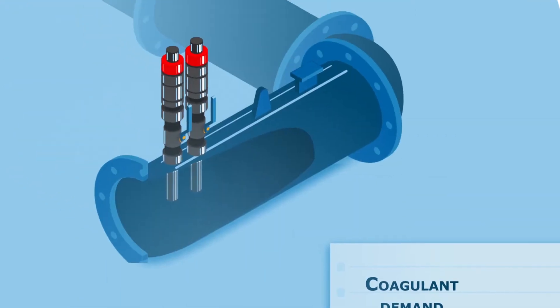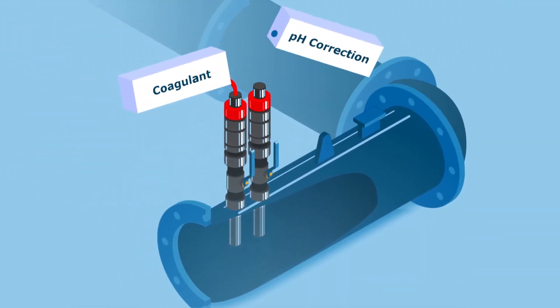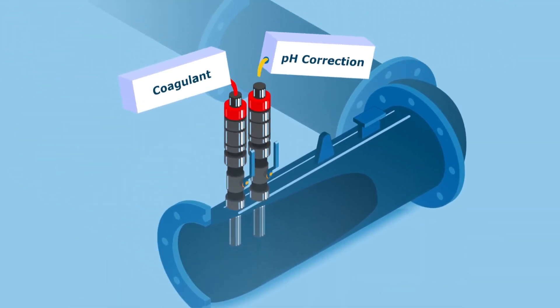In addition, physical and chemical aspects of plant layout and design can affect coagulation in ways that are difficult to uncover.